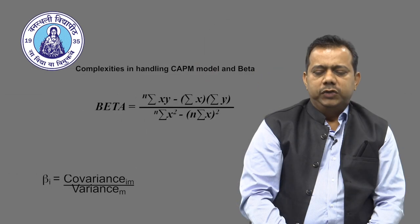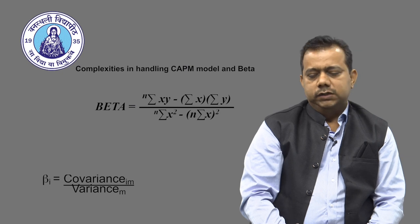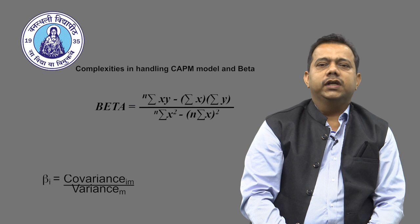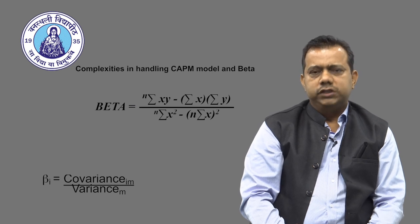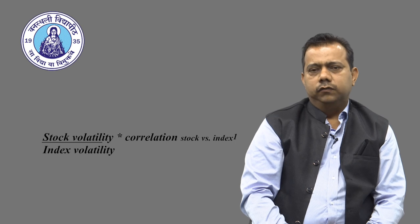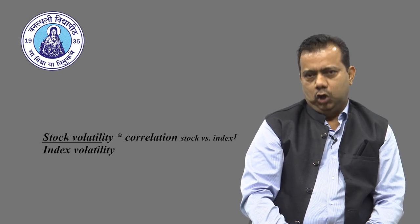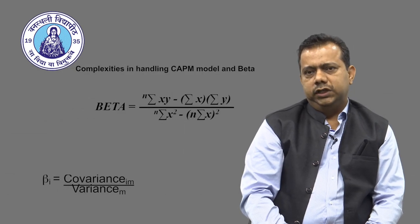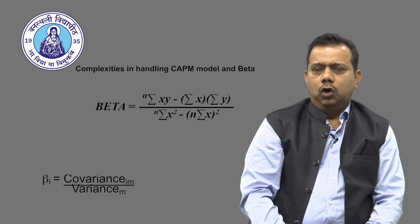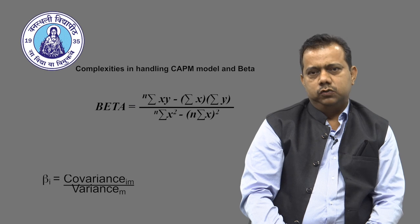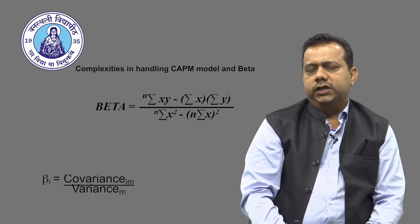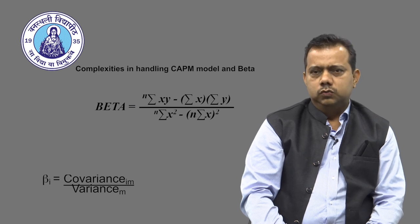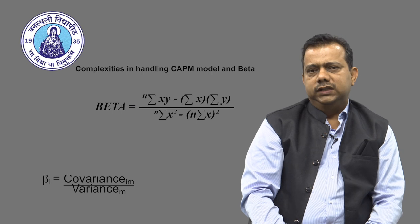Beta is calculated as the covariance of the stock and the market divided by the variance of the market. The procedure is straightforward: download daily data of the index and the stock, calculate the percentage change of each, call the index series X and the stock series Y, run a regression of X and Y, and the slope of the regression equation is essentially the beta.